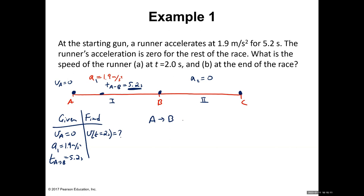So we're looking at some intermediate position D between A and B, where we have acceleration, we start from rest, and time is two seconds. We have acceleration of 1.9 meters per second squared, initial velocity zero, time two seconds, and we want to find the speed at position D. Since this is one-dimensional kinematics, we look at which equation to use.